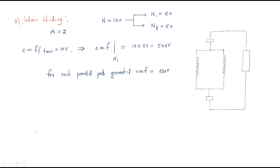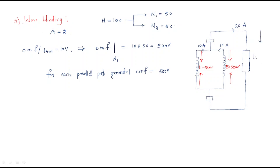Each parallel path generates 500 volts. For the current, assume each parallel path generates 10 amps, so both paths together generate 20 amps total.